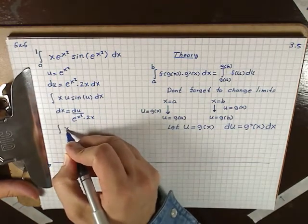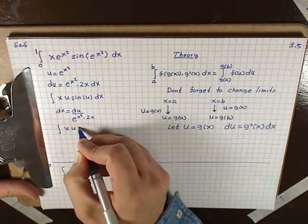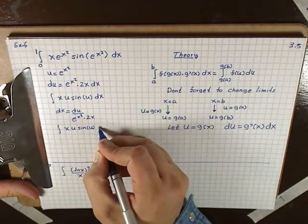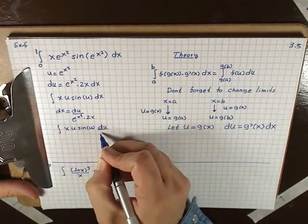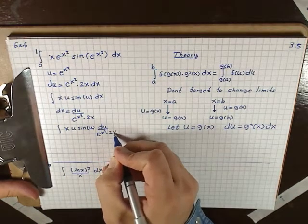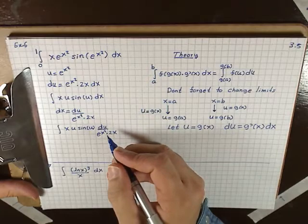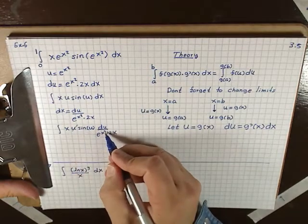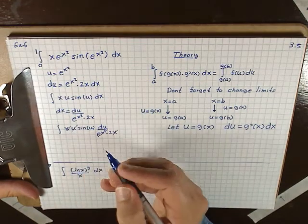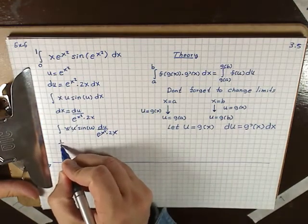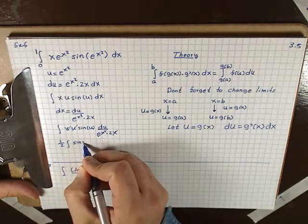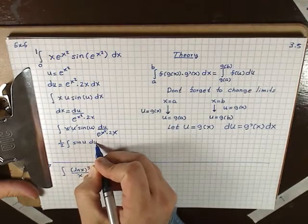We get x·u·sin(u)·dx, where dx is du divided by e^(x²)·2x. Now u equals e^(x²), so e^(x²) cancels with the e^(x²) in the denominator, and the x's cancel out. We are left with one half times the integral of sin(u) du.